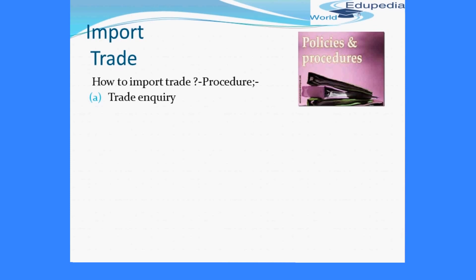In response to the inquiry, the exporter sends a reply in the form of a quotation known as a pro forma invoice. The second step is procurement of import license. In India, certain goods can be imported freely while for others it is mandatory to obtain an import license. The importer can consult the Export-Import (EXIM) policy to know whether a license is needed. If mandatory, the importer must obtain a license from the licensing authority and get registered with the Directorate General of Foreign Trade (DGFT) or the Regional Import-Export Licensing Authority (RIELA).